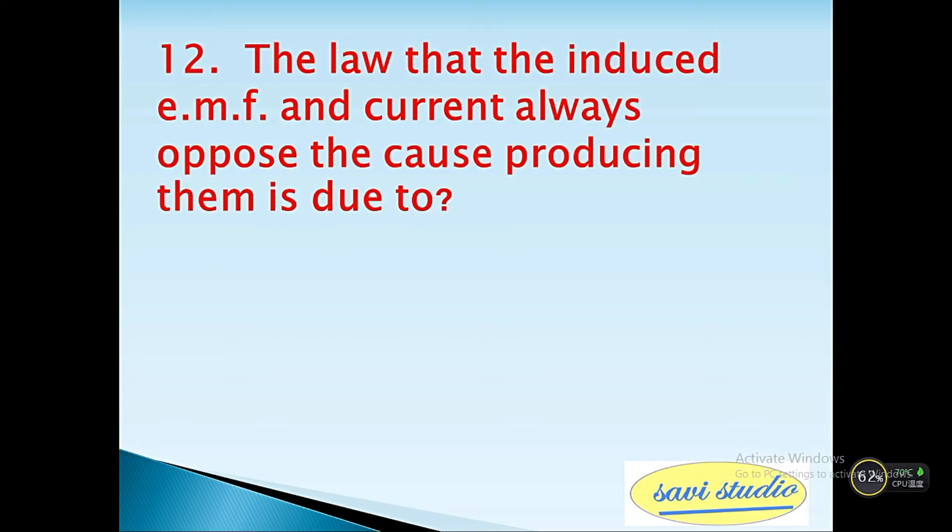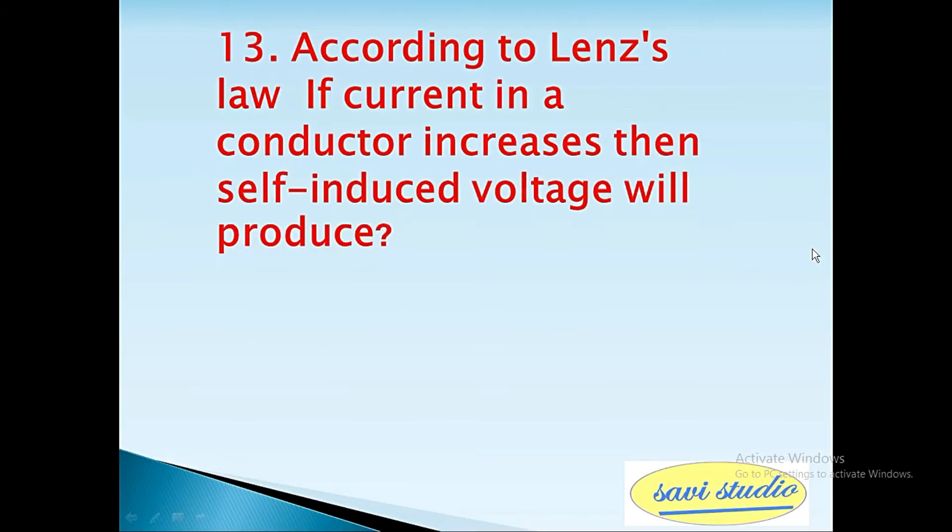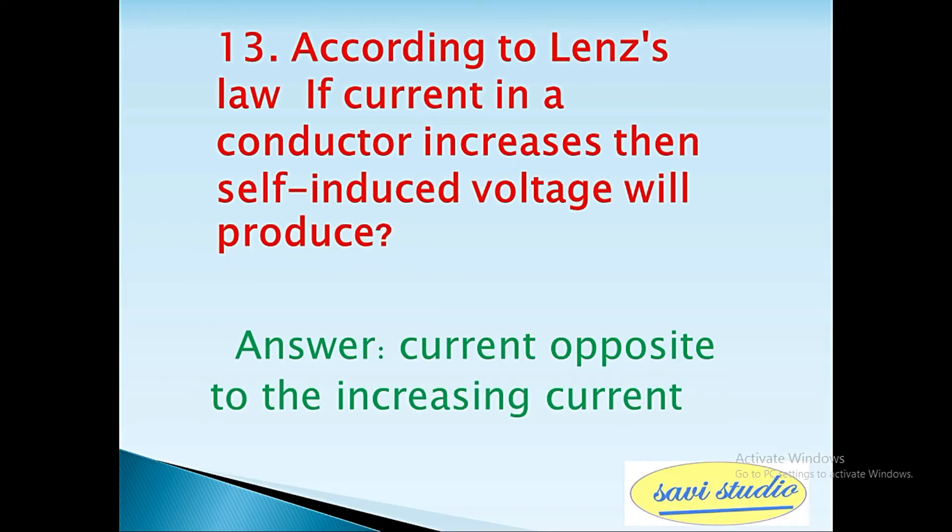12th question: The law that induced EMF and current always oppose the cause producing them is due to? Answer: Lenz's law. 13th question: According to Lenz's law, if a current in a conductor increases then self-induced voltage will produce? Answer: current opposite to the increasing current.